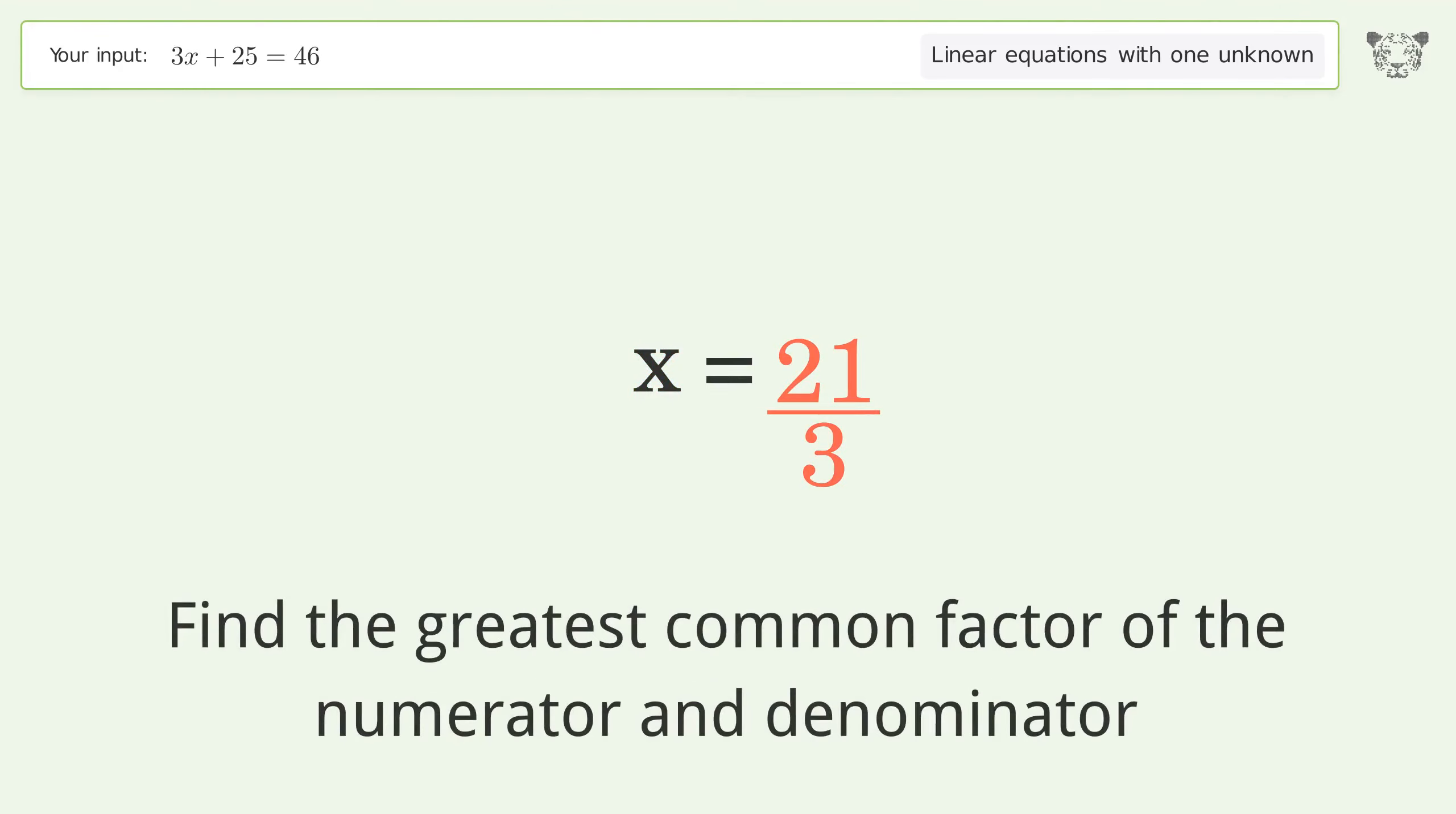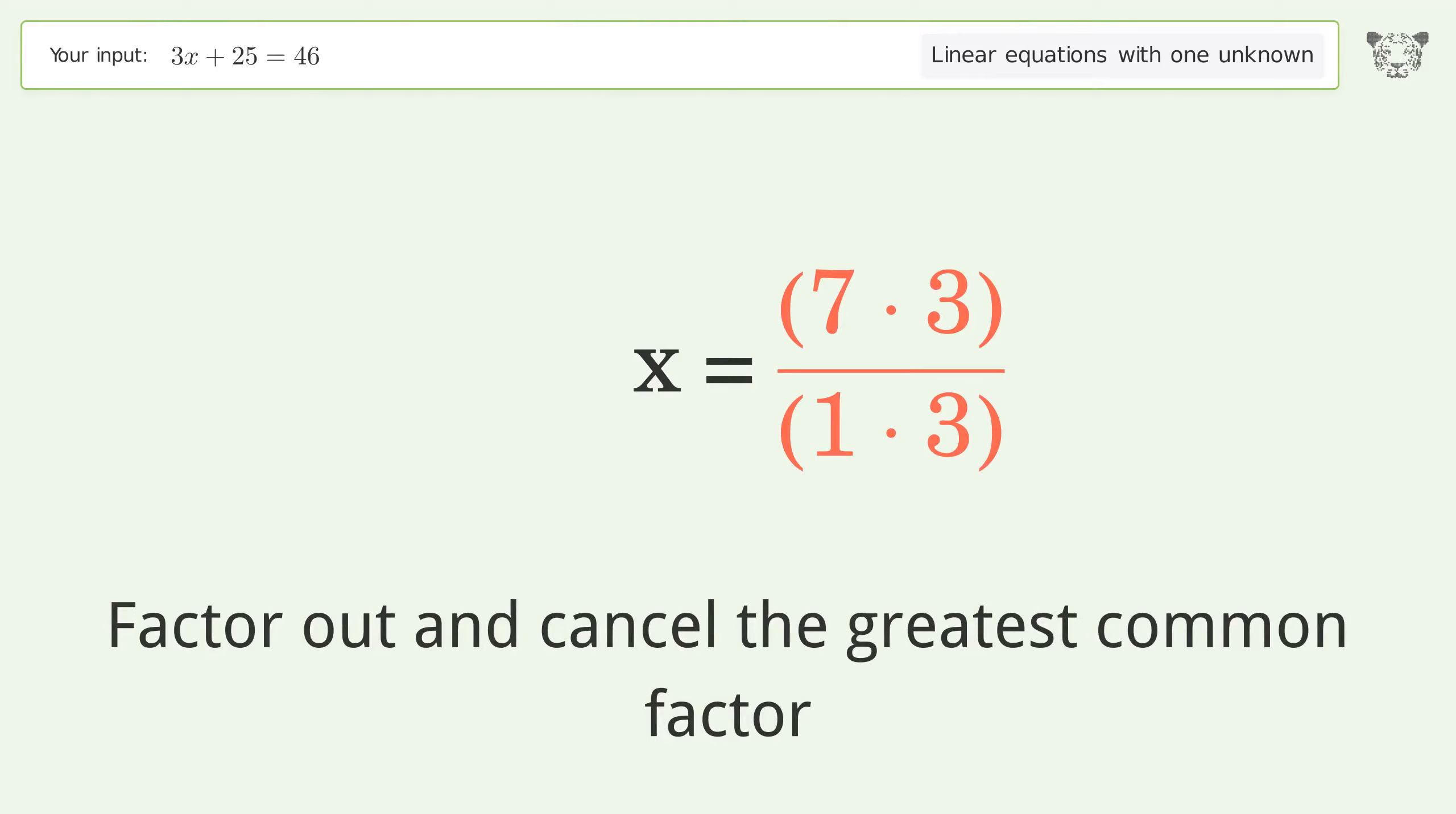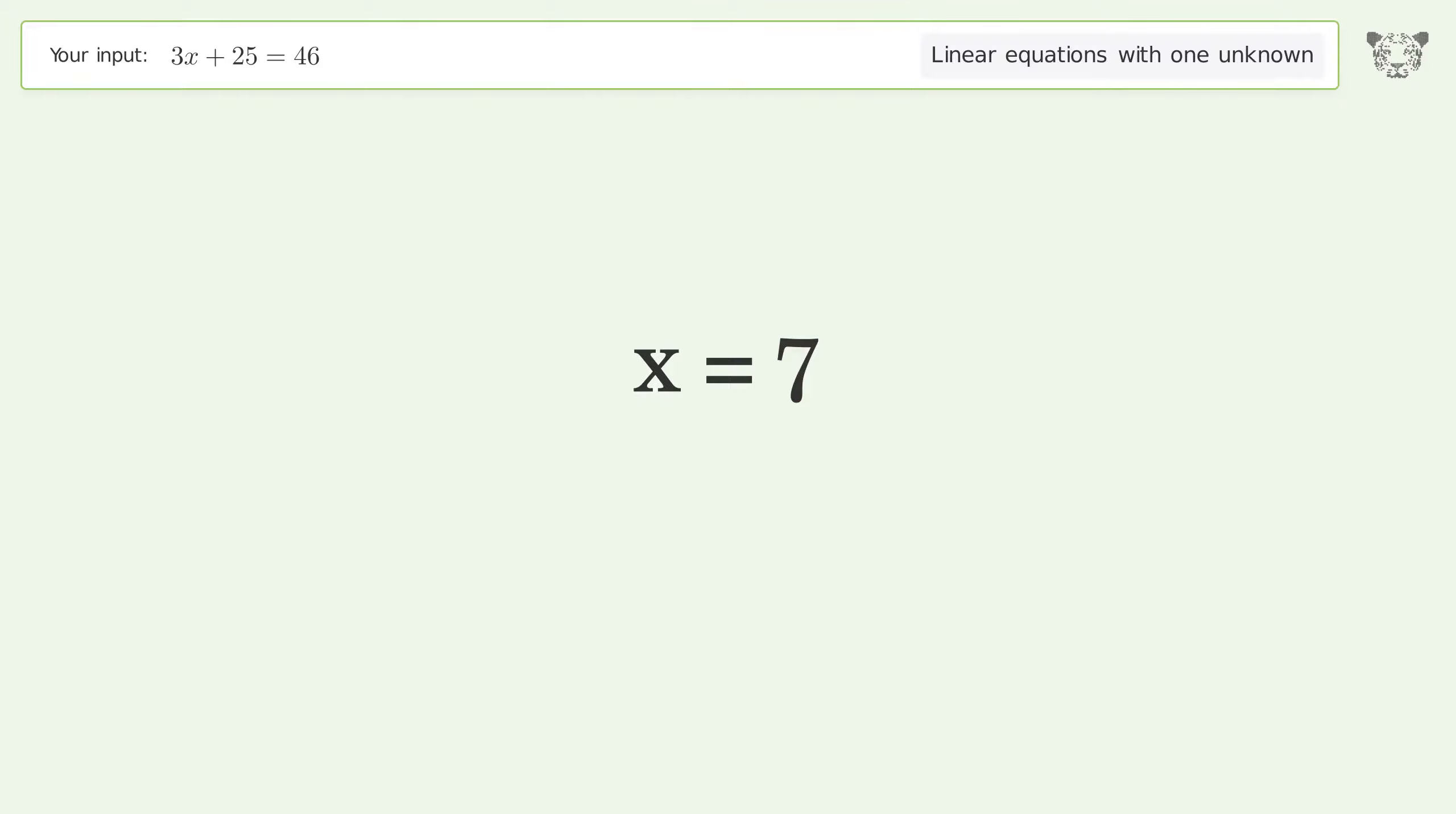Find the greatest common factor of the numerator and denominator. Factor out and cancel the greatest common factor. And so the final result is x equals 7.